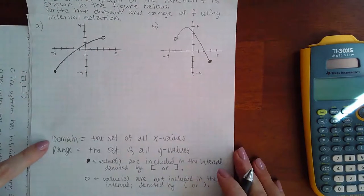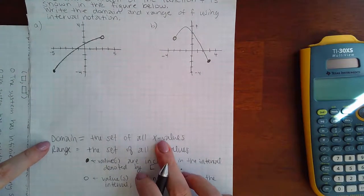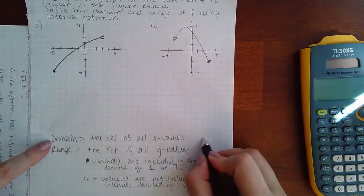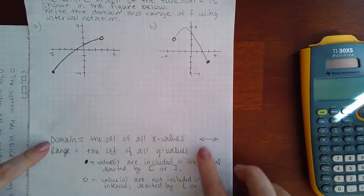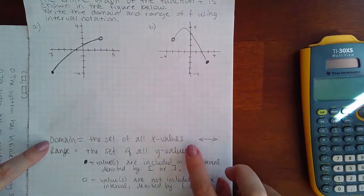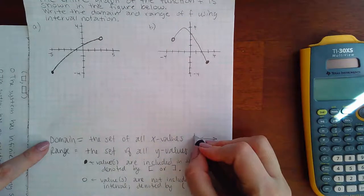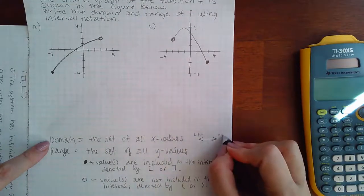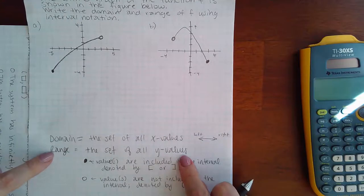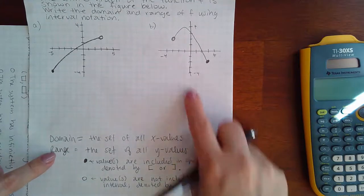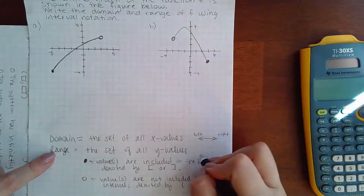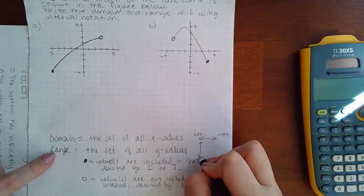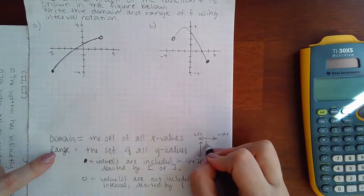Now, since we're talking about domain and that's x values, that's actually left to right. So you're visually looking at the graph from left to right. How far does it span from left to right? When you're doing the range, those are the y values. The y values are this way. So when you're doing those, you should be looking from the bottom to the top.